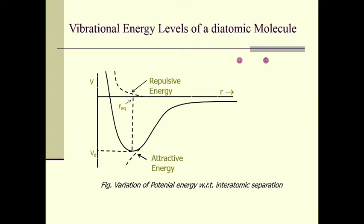We can say the two atoms settle at an equilibrium inter-atomic distance, which we call R equilibrium. R equilibrium is the distance at which the repulsive force and attractive force between the two atoms balance each other, giving us the stable molecule. At this point the potential energy of the molecule will be minimum.